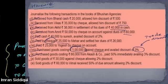Tenth transaction: sold goods of rupees 30,000 against cheque, allowing a two percent discount. Rithika answers: bank account debit to sales account. No entry for the discount is needed because the discount was given at the time of sale — it is treated as a trade discount only.